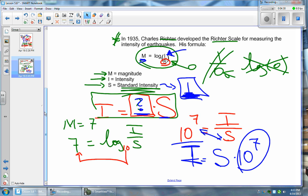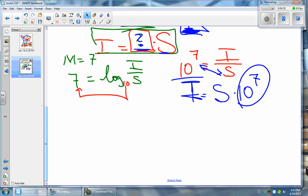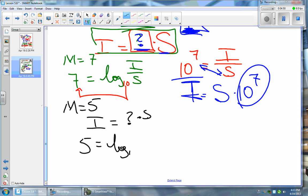Okay, so now let's figure out the magnitude 5 one. Now that we know how to do this, this is really easy. This is magnitude of 5. So our intensity equals some sort of question mark times S. That's what we're after. So magnitude of 5 equals log base 10 of I over S.